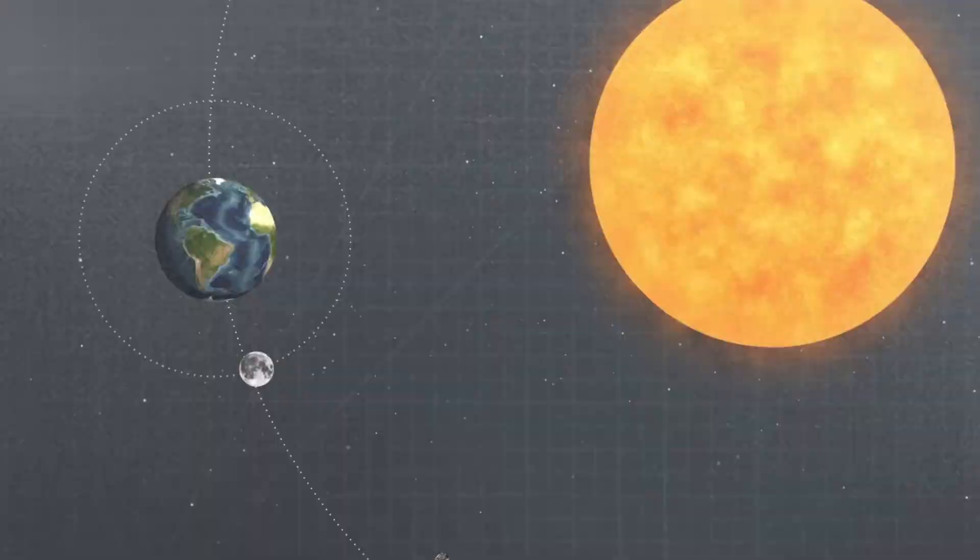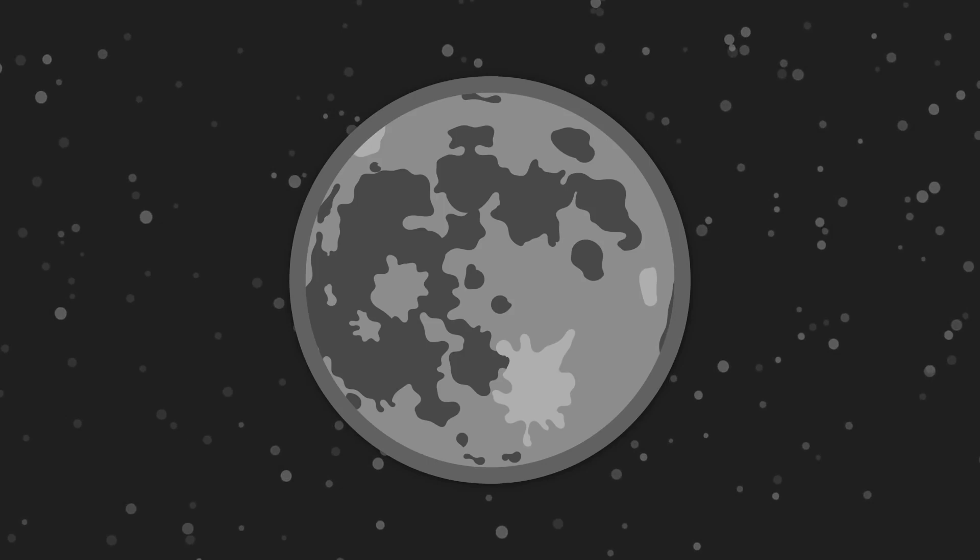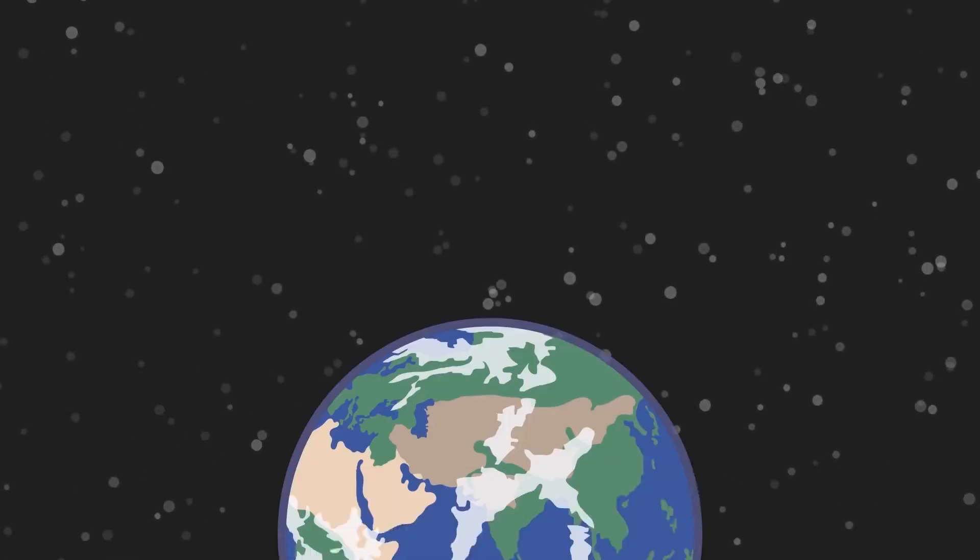The Moon does far more than illuminate our night skies. It protects us by intercepting asteroids that could otherwise strike Earth. If the Moon were fragmented or destroyed, these space rocks would pose a direct threat to our planet.